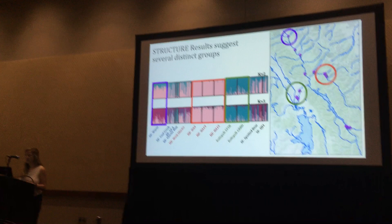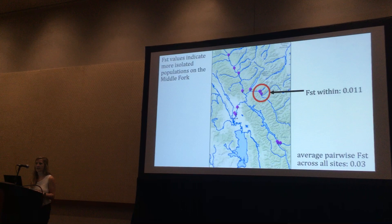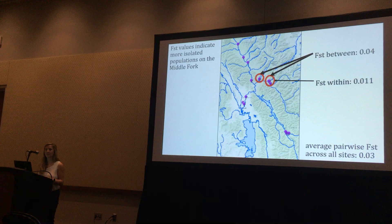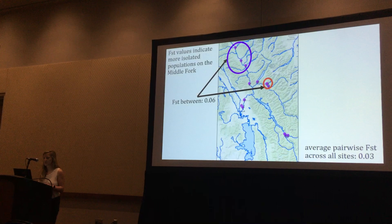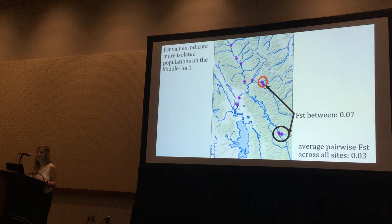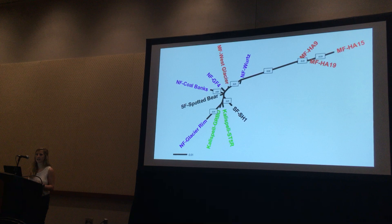Jumping to some FST values I've run recently, the average pairwise FST value was 0.03 across all sites. Looking specifically at the three sites in the Nyack floodplain of the Middle Fork, we get 0.01, which is quite low. Comparing to another site along the Middle Fork, it's 0.04, just above average; 0.06 compared to the North Fork sites; 0.06 for Kalispell sites; and 0.07 for the South Fork sites. Plotting all of these FST values into a tree, you can distinctly see how different the Middle Fork sites are, showing some kind of isolation happening along the Nyack floodplain.